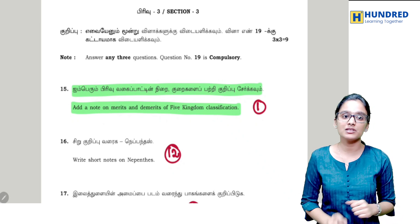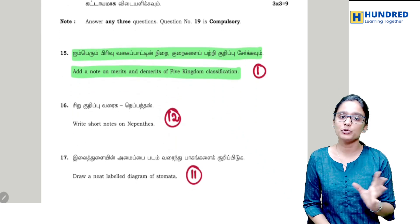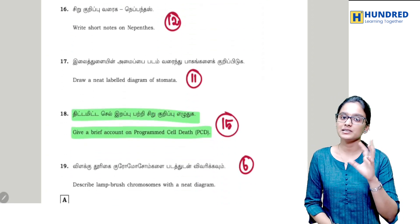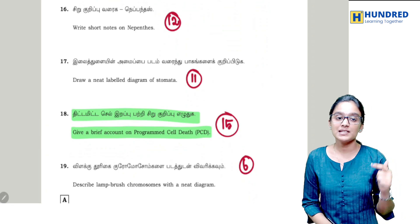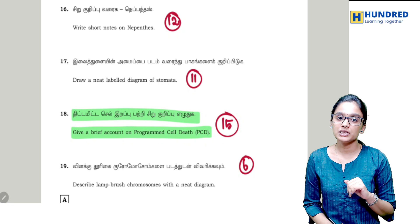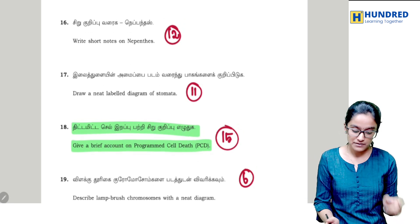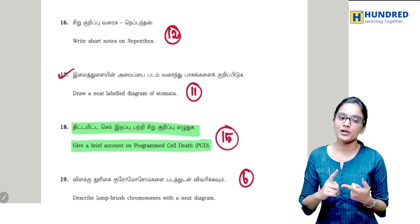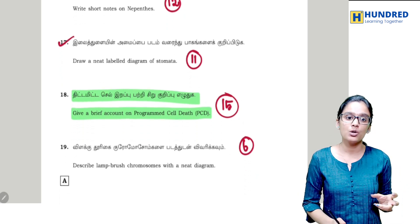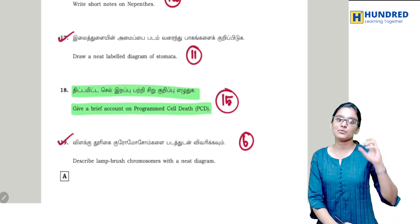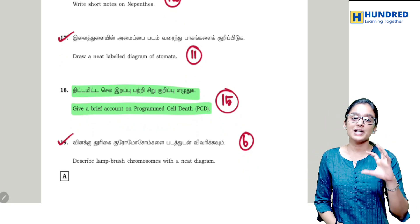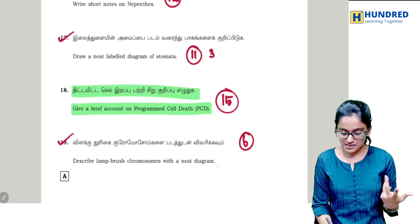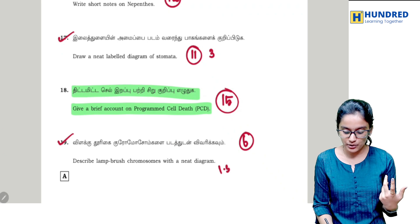Now for the three-mark section — section three — the first question is book back: that is the merits and demerits of the five kingdom classification. We have already discussed this. The next, question 18, is a diagram-based question. The most important diagram is the lampbrush chromosome. If you read that diagram, you can get at least 3 marks, or at least 1.5 marks.